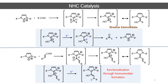From this Breslow-type intermediate we can get back the aldehyde and the carbene, easily changing the character of the β-carbon of the aldehyde and obtaining electrophilic substitution at that particular position.